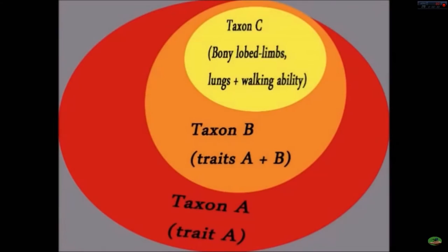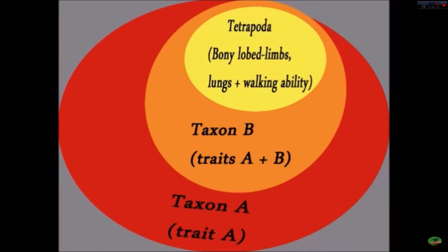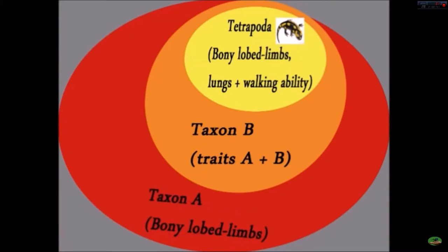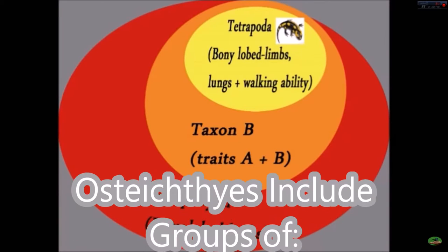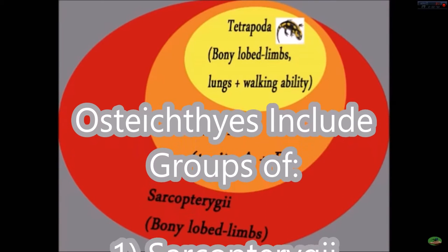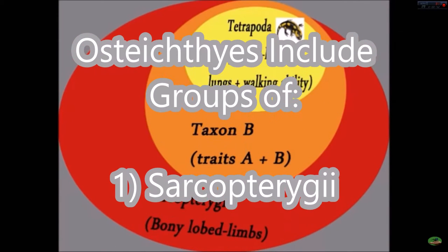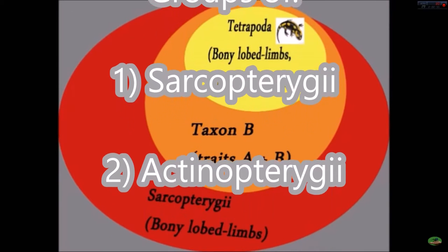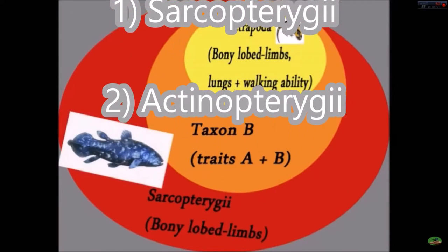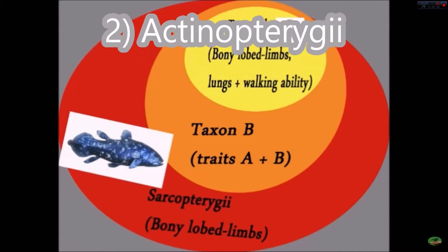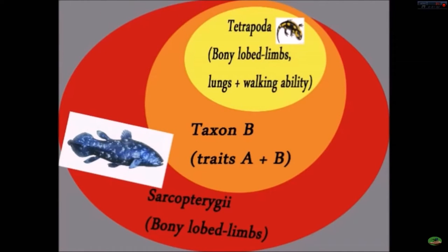These features can be our traits A, B, and C respectively, where Tetrapoda is taxon C. We can use any creature within Tetrapoda to represent it, but let's just use a salamander. Taxon A is thus defined as chordates with calcified bones in a lobe-limbed skeletal design. This taxon is called Sarcopterygii, and since this is taxon A and we're trying to find the transition between taxon A and C, it ought to be represented by some creature that has trait A yet doesn't have lungs nor well-developed limbs. The living coelacanth subclass of fish, Actinistia, fits this criterion quite well, so we can use them as representatives.